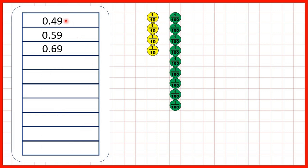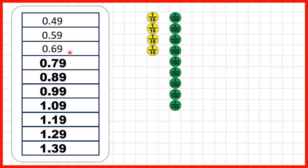Now 0.49, 0.59, 0.69. What are our next seven numbers? Well you can see that we're counting in tenths. So showing our place value counters we start with 0.49, so four tenths and nine hundredths. And we're counting in tenths.